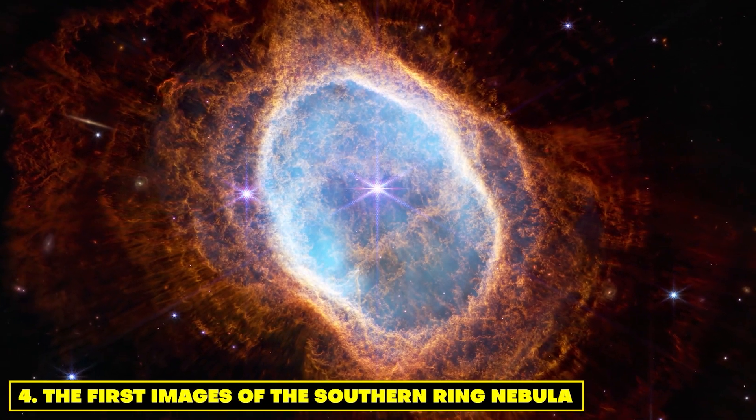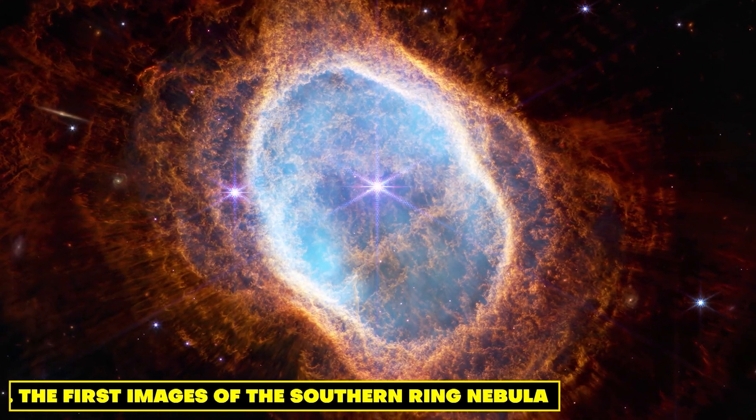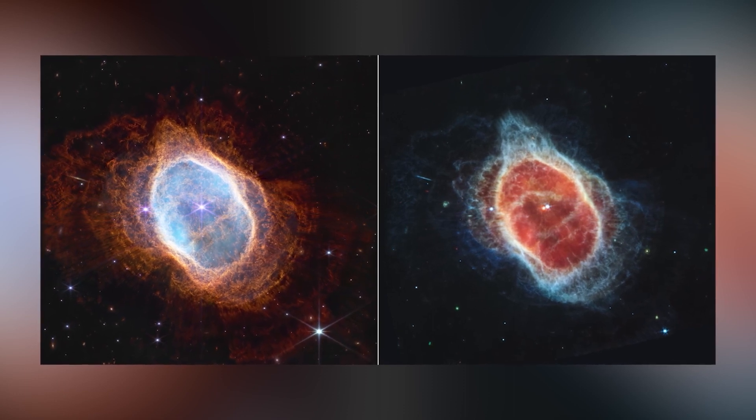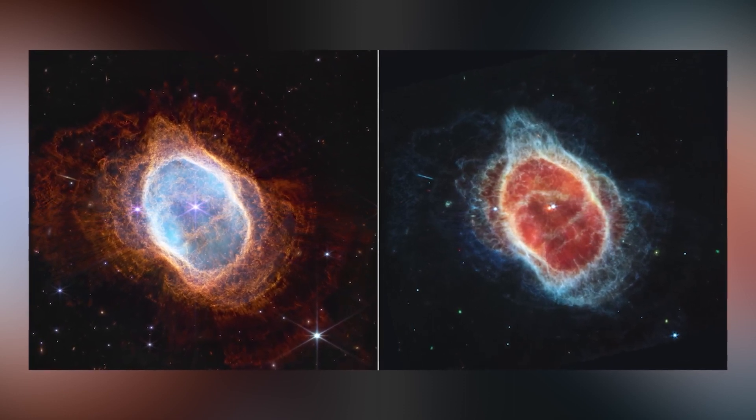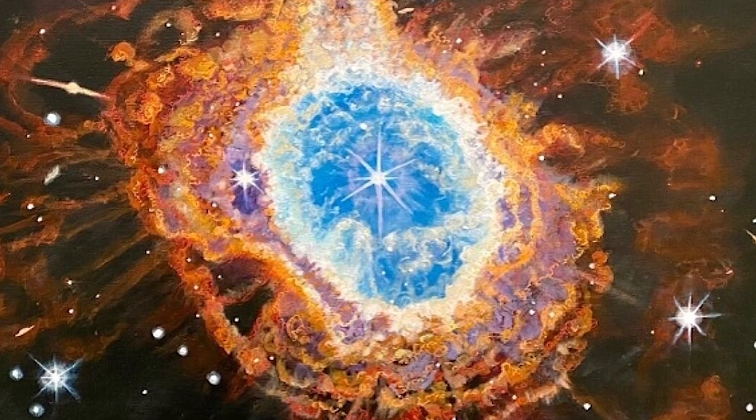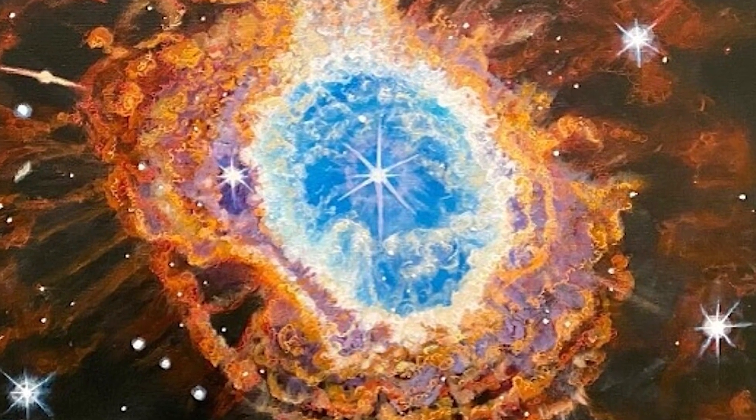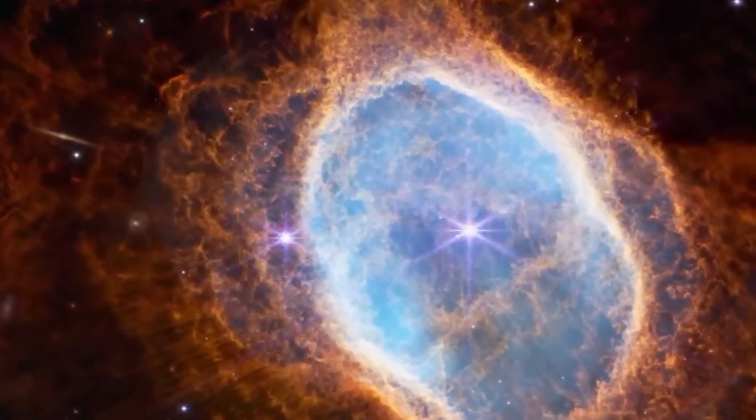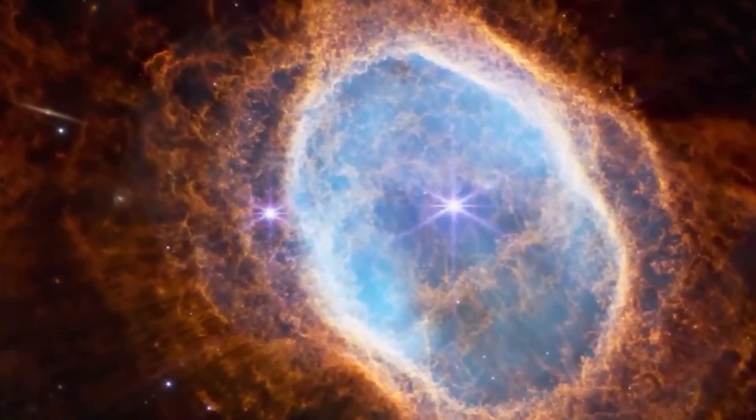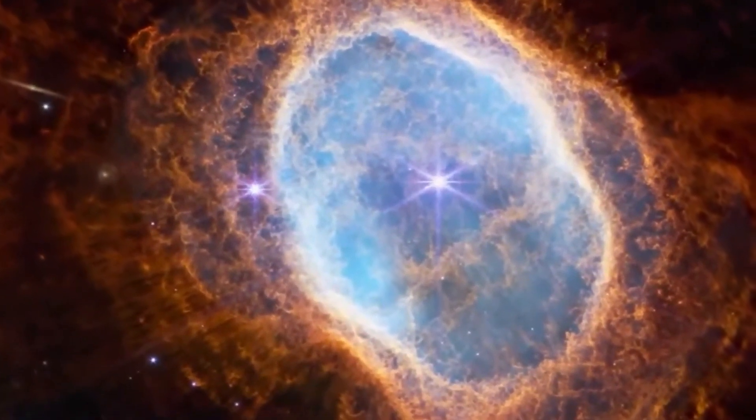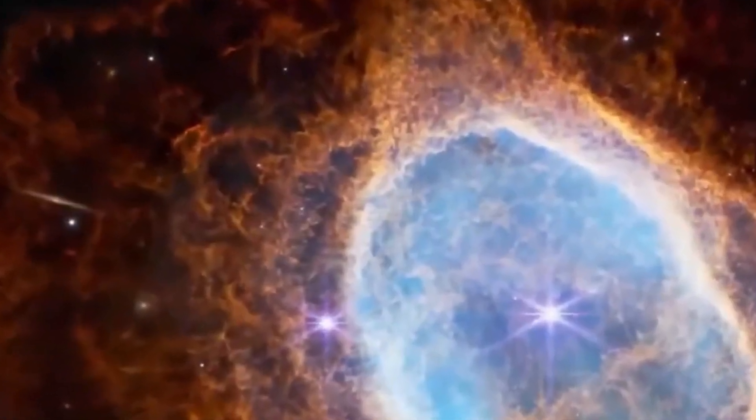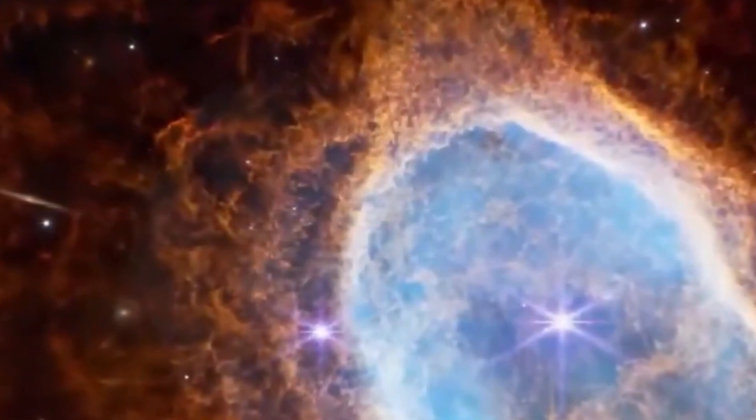Number 4. The First Images of the Southern Ring Nebula. With an artist's touch, the James Webb Space Telescope unveils humanity's first glimpse of the Southern Ring Nebula, a dying star situated a staggering 2,000 light-years away. These resplendent images lay bare the twilight of a star's existence as it gracefully releases its outer layers into the cosmic abyss. The nebula's intricate and fragile structure serves as a poignant testament to the star's final act, extending an exclusive invitation to astronomers to peer into the late stages of stellar evolution.